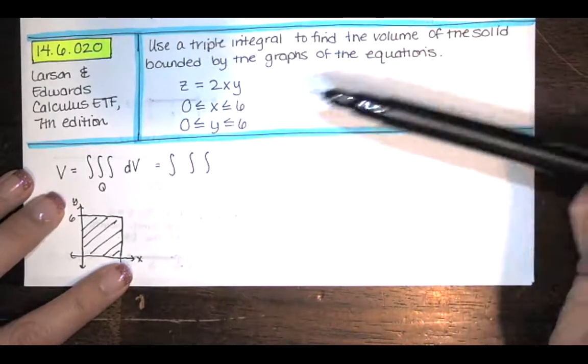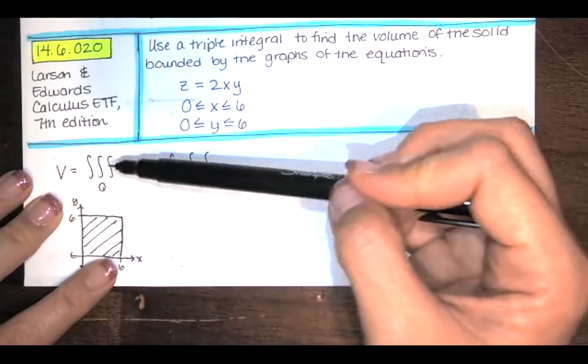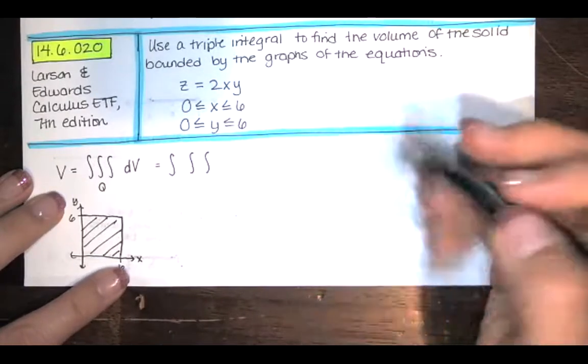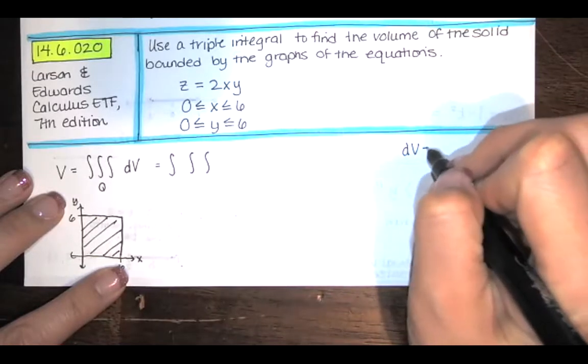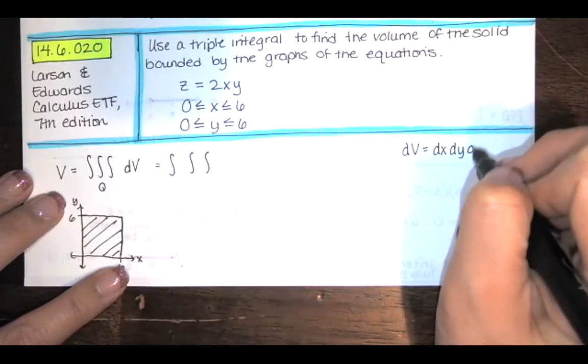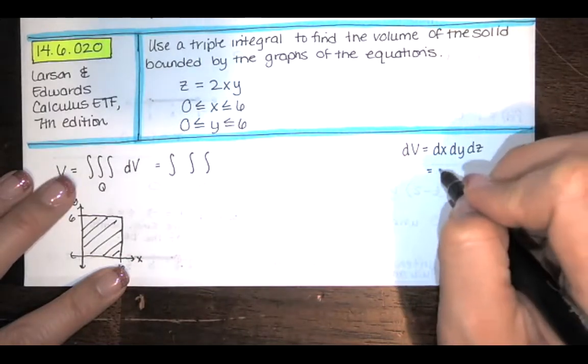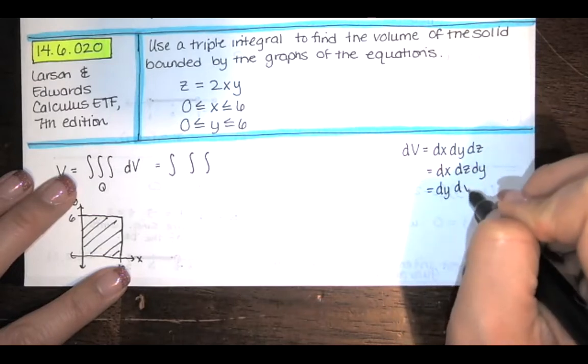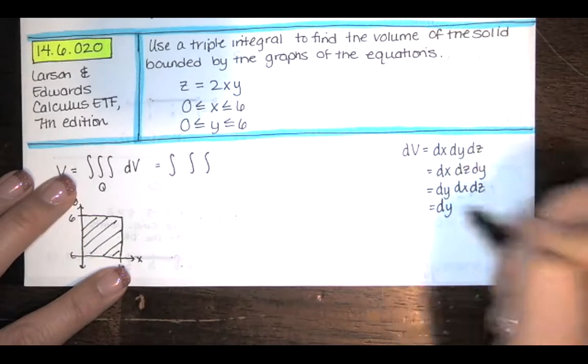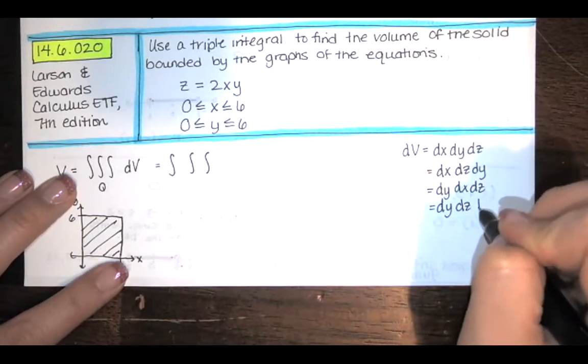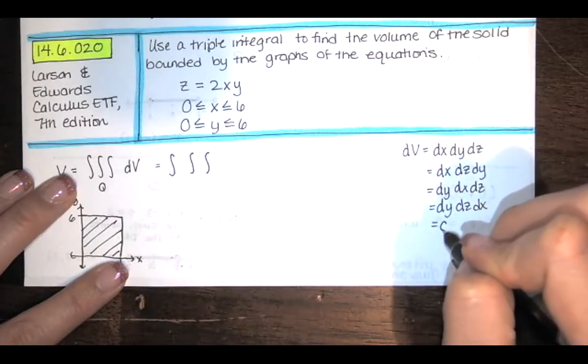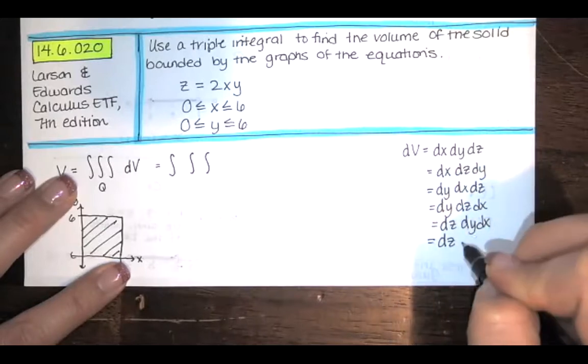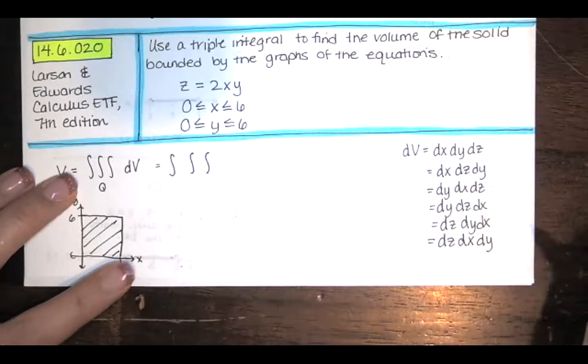They set up a triple integral. We know the volume is this triple integral over the solid region Q of dV. The integrand is just an implied one. And there are lots of different ways that we could write dV. dV is dx dy dz. But since multiplication is commutative, you could do dx dz dy, or dy dx dz, or dy first and then z and then x, or integrate with respect to z first and then y and then x, or integrate with respect to z first and then x and then y. Any one of those would be fine.